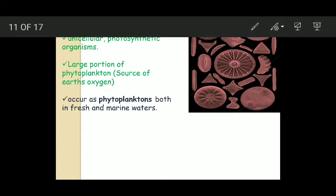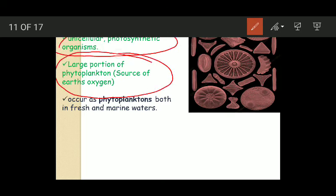So diatoms are unicellular photosynthetic organisms. They constitute a large portion of phytoplankton. Phytoplankton are small living organisms that occur on the surface of water bodies. These phytoplankton possess photosynthetic pigments and hence act as a major source of earth's oxygen. They occur as phytoplankton both in marine as well as fresh waters.